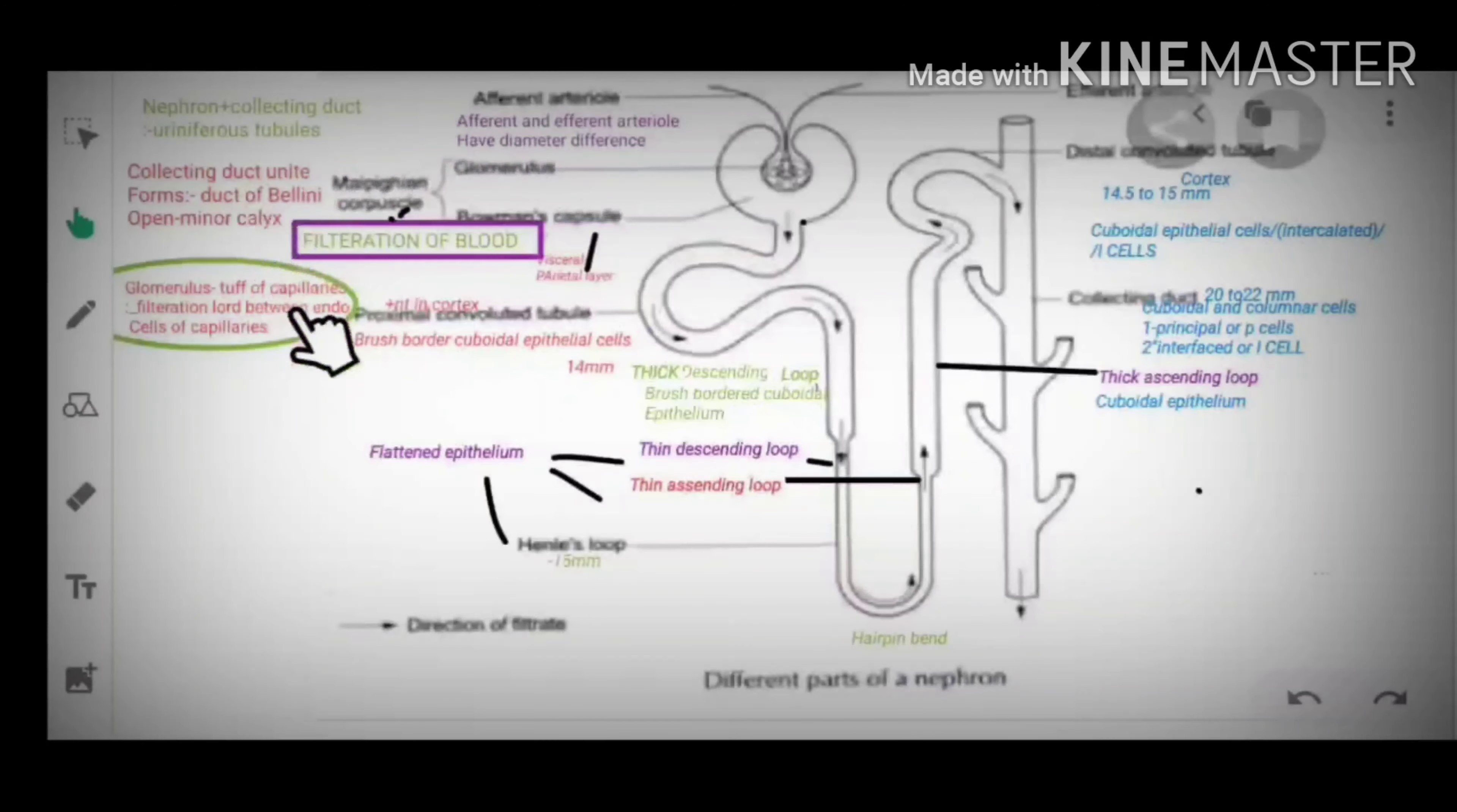Function of Malpighian corpuscles is filtration of blood. Blood gets filtrated here and protein molecules don't get filtrated through the Bowman's capsule.